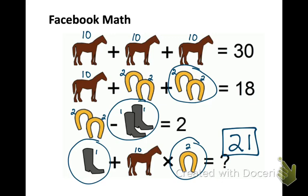The reason I brought this up was because we've got 3 variables here. We've got a horse, we've got horseshoes, and we have boots. So this is kind of the same idea of what we will be doing in this concept.